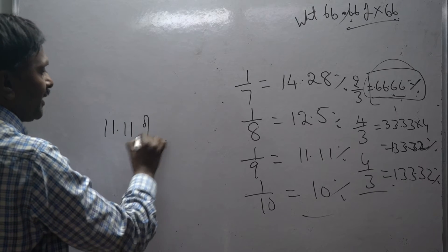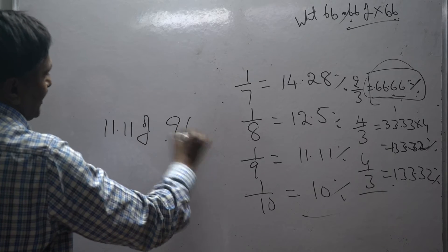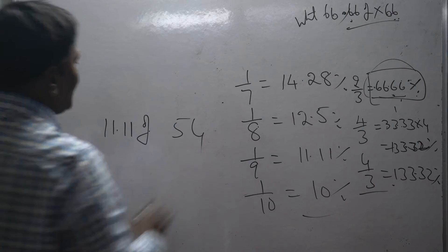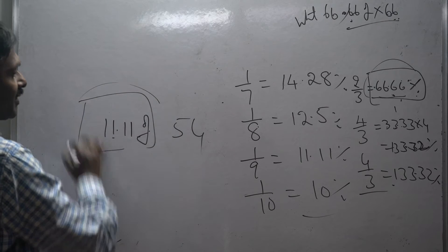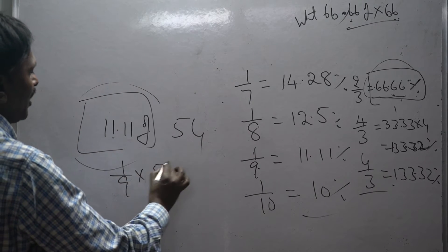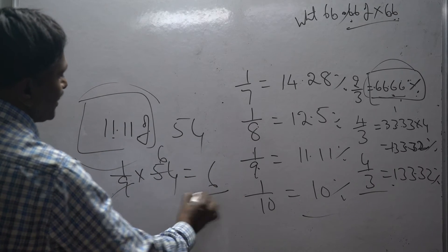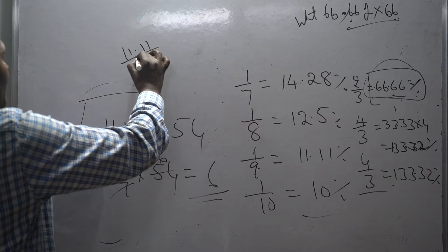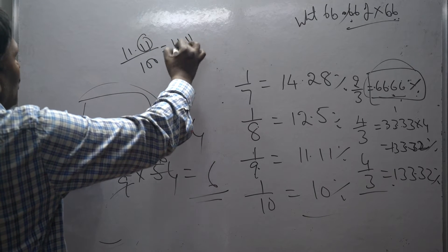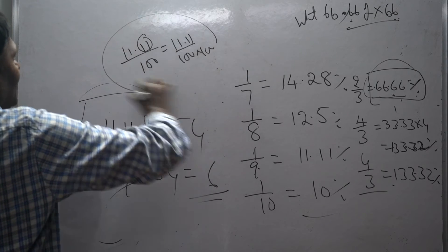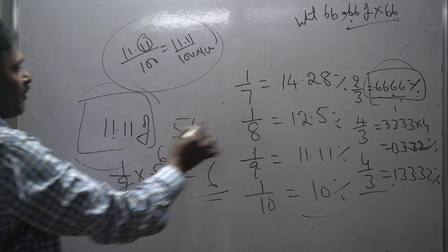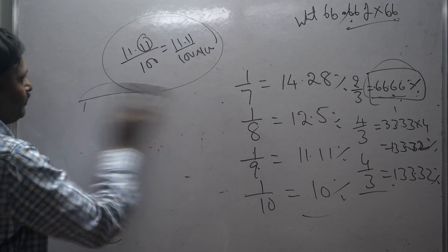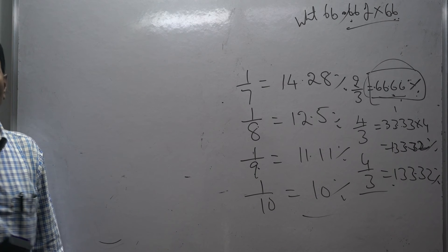Another example: 11.11 percentage of 54. If you know that 11.11 percentage equals 1 by 9, then 1 by 9 into 54 equals 6. If you don't know this, the process is lengthy — 11.11 divided by 100, removing decimals, and so on. So remembering reciprocal values saves a lot of time in examinations. I hope you understood well.